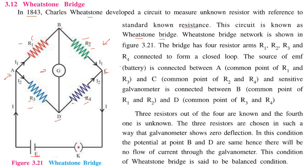Three resistors out of four are known and the fourth one is unknown. The three resistors are chosen such that the galvanometer shows zero deflection. In this condition, the potential at points B and D are the same because there is no movement of the galvanometer and no flow of current. This condition of the Wheatstone Bridge is called the balanced condition.